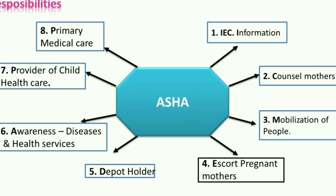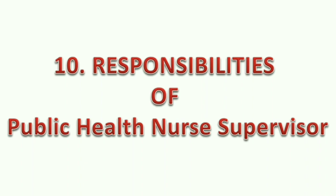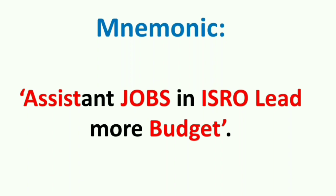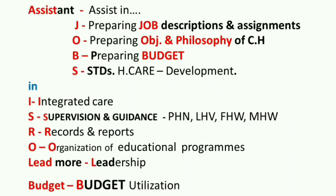Responsibilities of public health nurse supervisor — the mnemonic is 'ASSISTANT JOBS IN ISRO NEED MORE BUDGET.' She has to assist the district public health nurse for various activities. J stands for preparing job descriptions and assignments; assisting in preparing objectives and philosophy of community health nursing; B for preparing budget; S for assisting in maintaining and developing standards in health care; I for integrated health care; S for supervision and guidance of public health nurses, lady health visitors, female health workers, and male health workers; R for records and reports; O for organization of educational programs; LEAD for leadership; BUDGET for budget utilization.